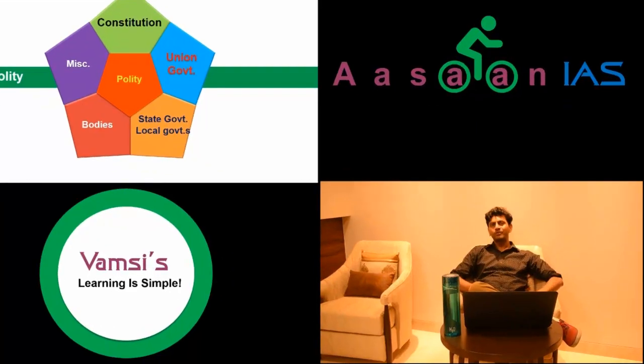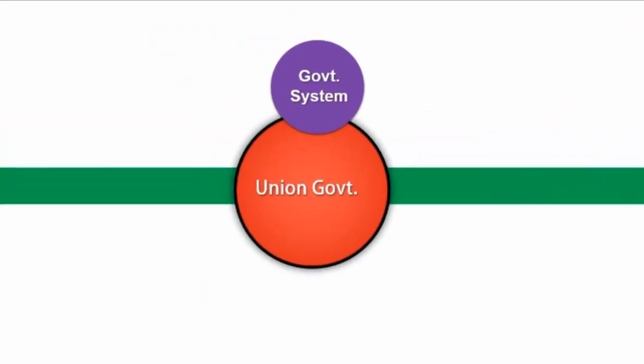Now we move on to the union government. I further divide this into 4 parts. First, we understand the system of government — here we will see various types of governments, discuss the parliamentary system, the presidential system, unitary and federal features, and even center-state relations and inter-state relations.